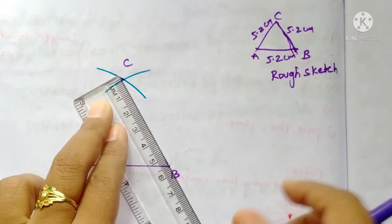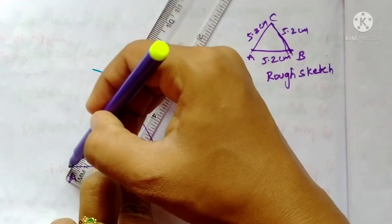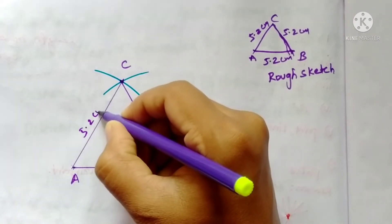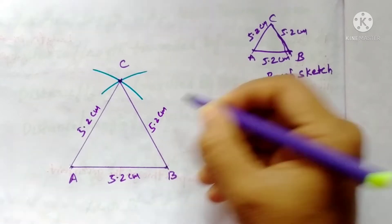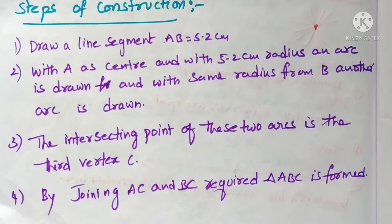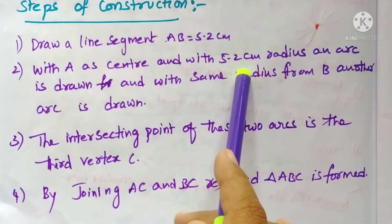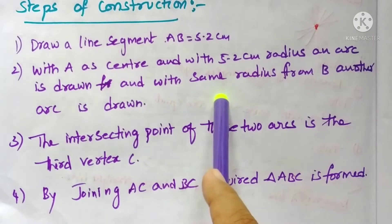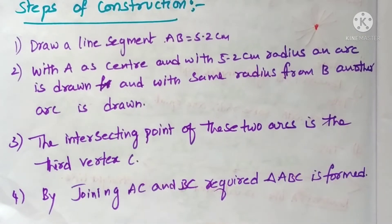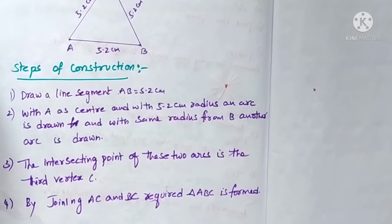Similarly, from B also with the same radius, draw an arc. These two arcs meet at one particular point — that is the third vertex C. Now just join BC and AC. That's it — this is the required equilateral triangle of 5.2 centimeters. Steps of construction: draw line segment AB of 5.2 cm. With A as center and 5.2 cm radius, draw an arc. With the same radius from B, draw another arc. The intersecting point is the third vertex C. By joining AC and BC, the required triangle ABC is formed.